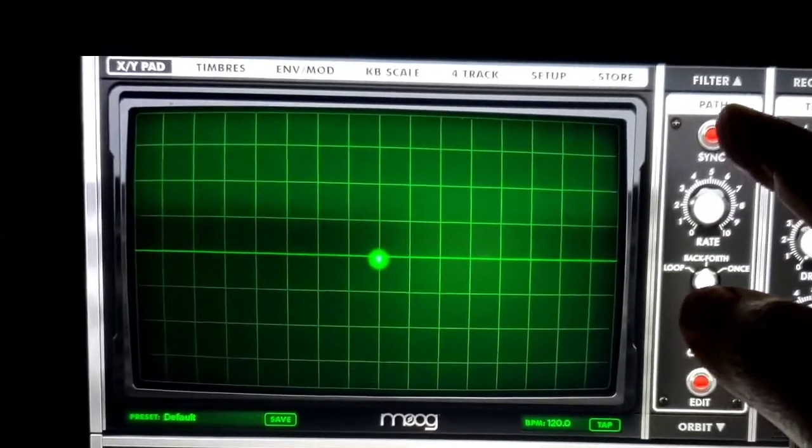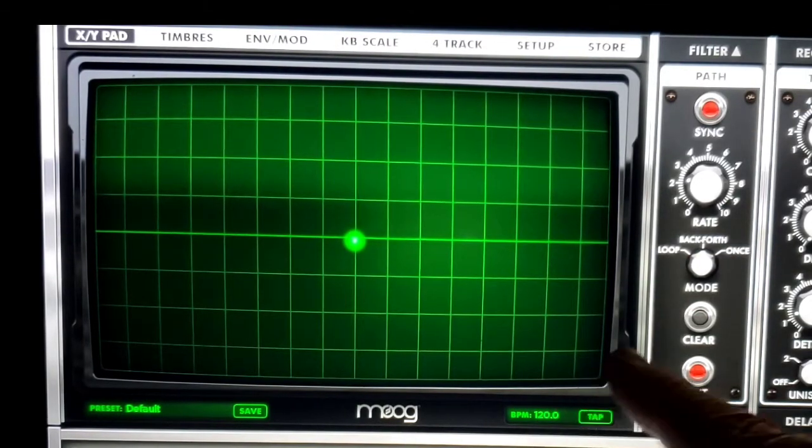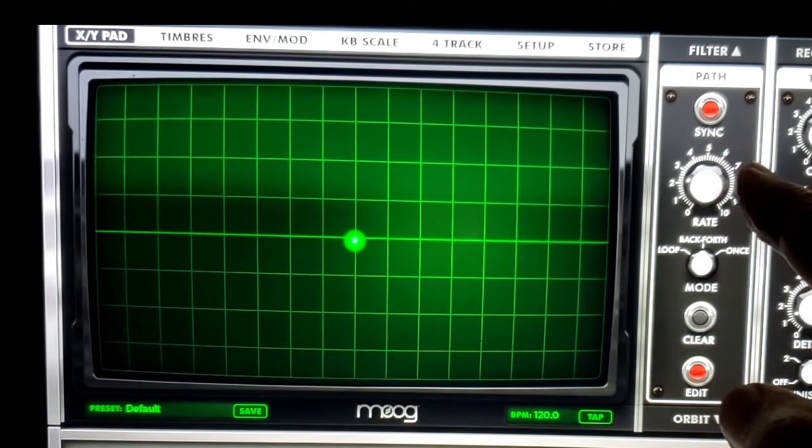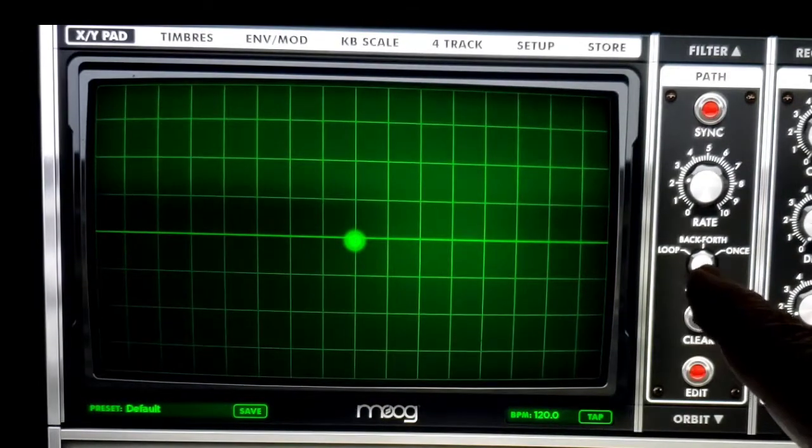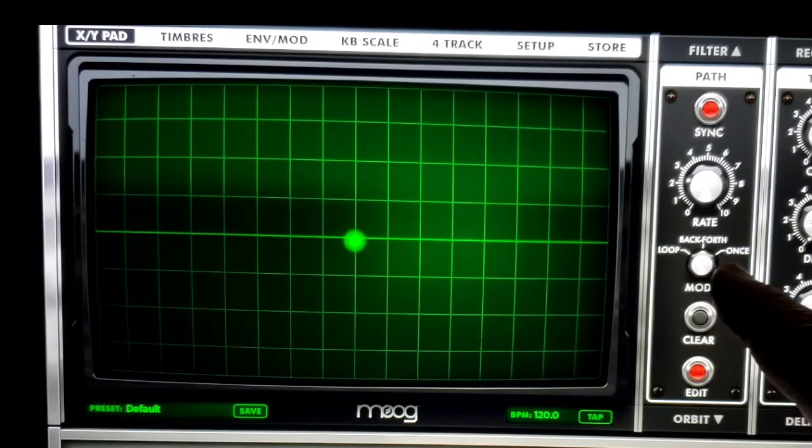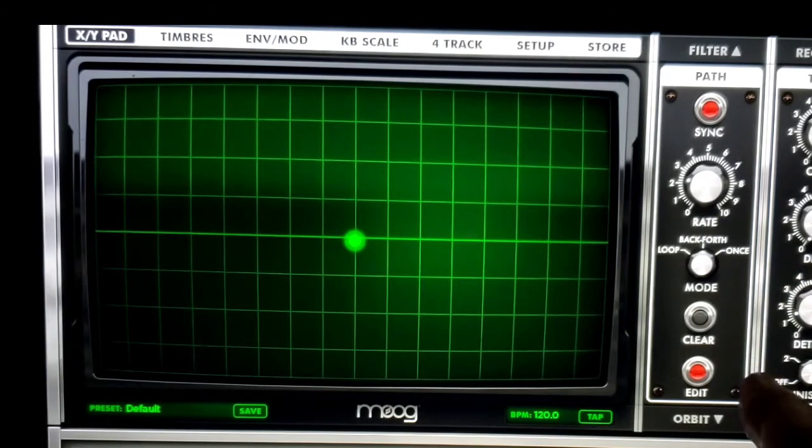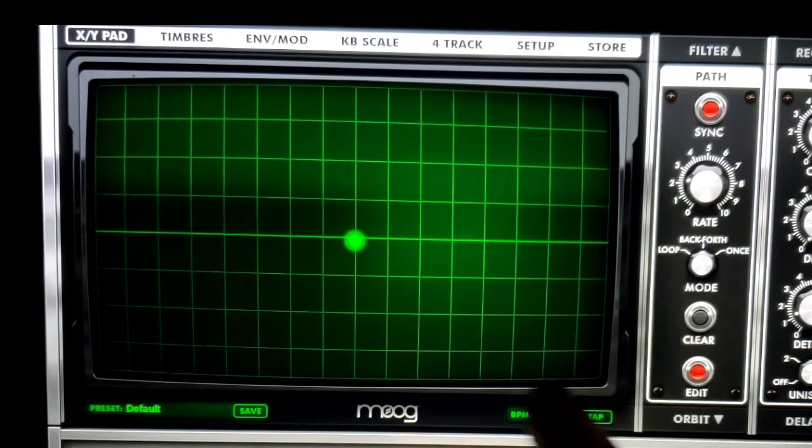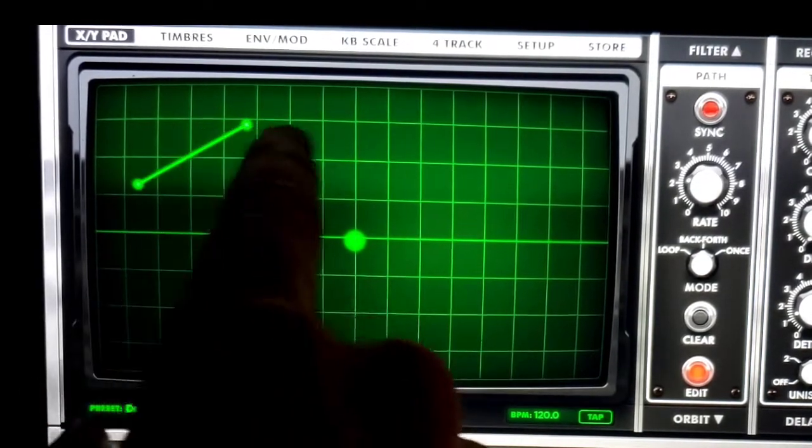The sync button will sync it with this beats per minute if you want to do that. The rate will tell you how fast it's going to go through the path. In the mode it'll tell you whether it's going to loop through the path, whether it's going to go back and forth on the path, or whether it's going to just do once. To create a path you have to hit the edit button, and what I'm going to do here is just make a big circle.